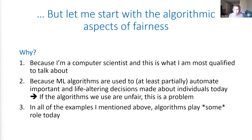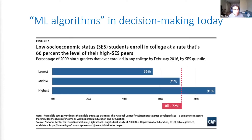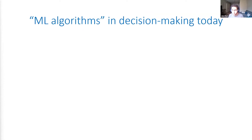In all of the examples I just mentioned, algorithms are actually playing some role today. So it's important to think about whether those algorithms are going to be fair. I'm going to start with machine learning algorithms in the most general sense of the term — something that has any kind of systematic rules that are going to map some input to an output.